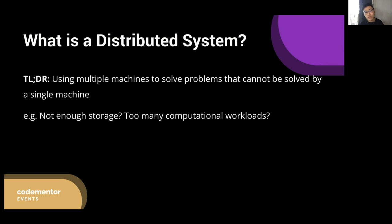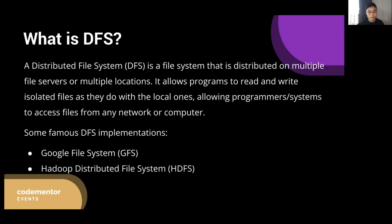Some famous distributed computing systems include MapReduce, Apache Spark, Apache Flink, and more. If you have great interest in the distributed computing system, I can host another event dedicated to discuss how to design one. Now we already have an intuitive understanding of distributed systems. Then what is DFS? A distributed file system is just a file system that is distributed on multiple file servers on multiple locations. It allows programs to read and write isolated files as they do with the local ones, allowing programmers or systems to access files from any network or computer.